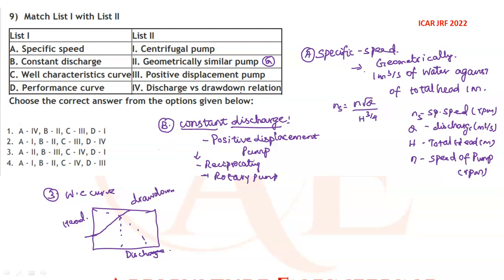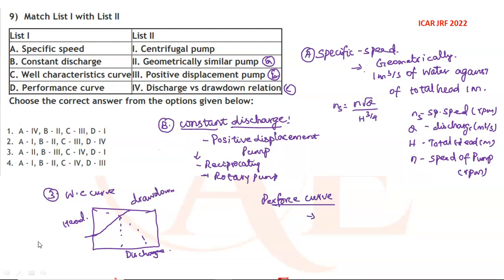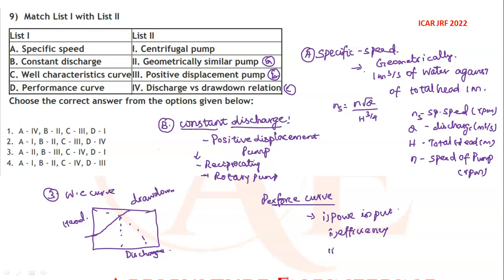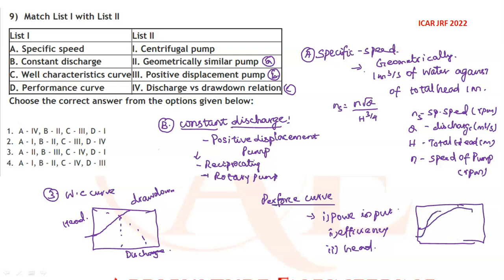It forms a curve between drawdown and discharge — a discharge versus drawdown relation. For option C and option B, the performance curve of the centrifugal pump is used. This performance curve consists of power input, efficiency, and head. There are three types of curves: the head-capacity curve, the efficiency curve, and the power curve — discharge versus total head.